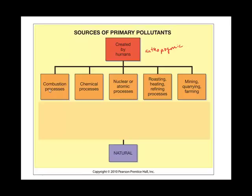Here are some examples of things that, because of human activity, we put into the Earth's atmosphere that are adverse to life. One is burning fossil fuels — the combustion process. Another is chemical processes in general. A third is nuclear reactions, whether for creating energy or other purposes. Our factories have processes that put out pollutants, and in general, as we mine and farm, we put airborne things into the atmosphere that are harmful to life — either gases or particulates, with particulates being solid or liquid.